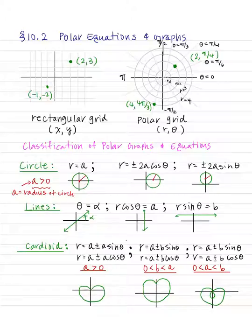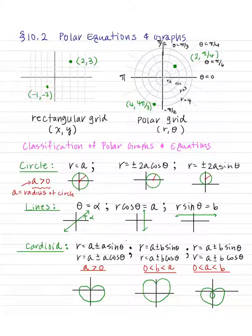Now let's look at the polar grid. The polar grid goes around the circle. Each line is called the radial line. You can think of it as the first line being r equals 1, radius 2, radius 3, and so forth. And instead of (x, y), when it comes to the polar coordinate system, your ordered pair is going to be (r, θ).